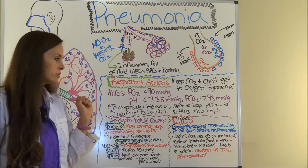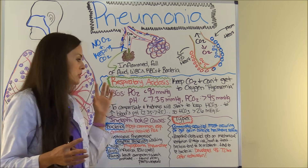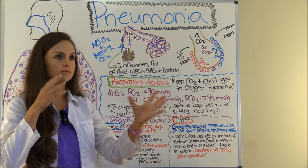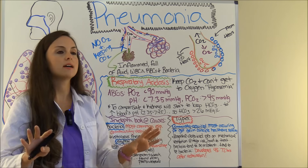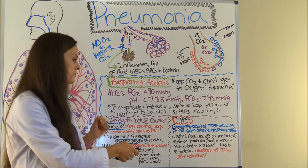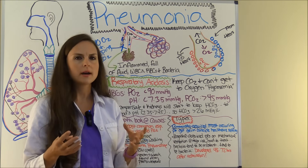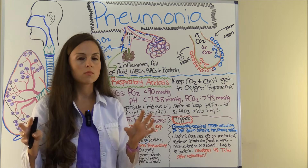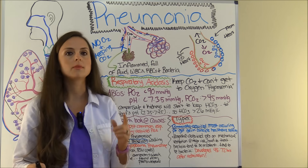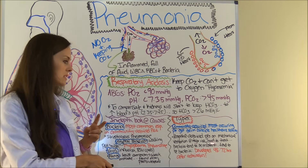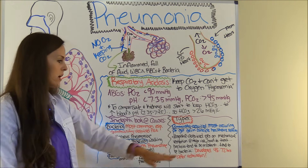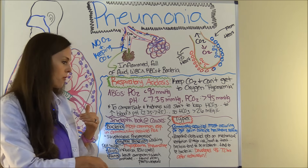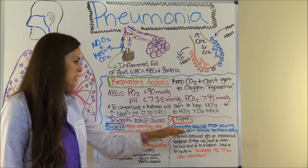Now let's talk about the types of pneumonia. There are two types to be familiar with. Community-acquired pneumonia is the most common — the person acquired the germs or bacteria outside of the healthcare setting. Hospital-acquired pneumonia is where the person contracted the pneumonia germ within the hospital setting; patients on mechanical ventilation are at particular risk. This tends to be the worst type because the bacteria is often very strong and resistant to antibiotics. The criteria for hospital-acquired pneumonia: the patient developed it 48 to 72 hours after admission.